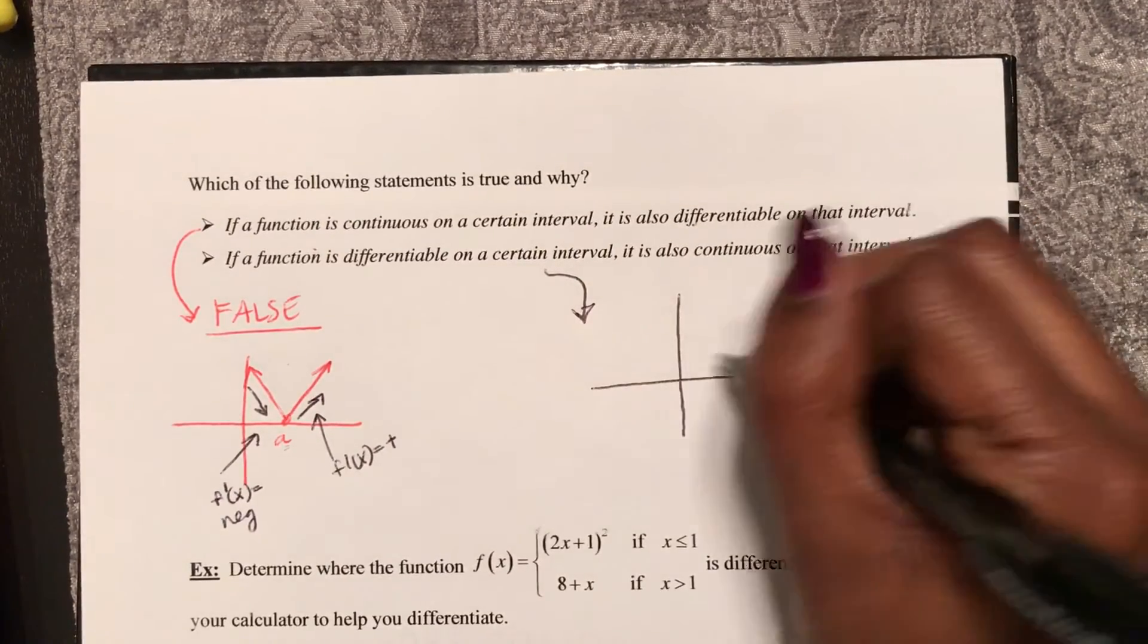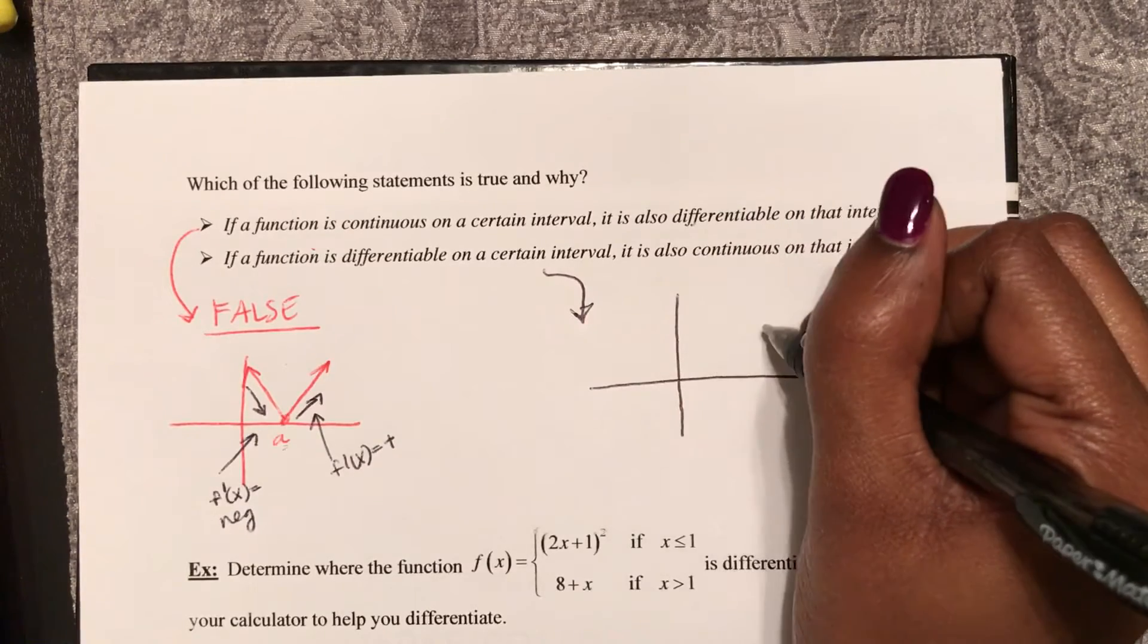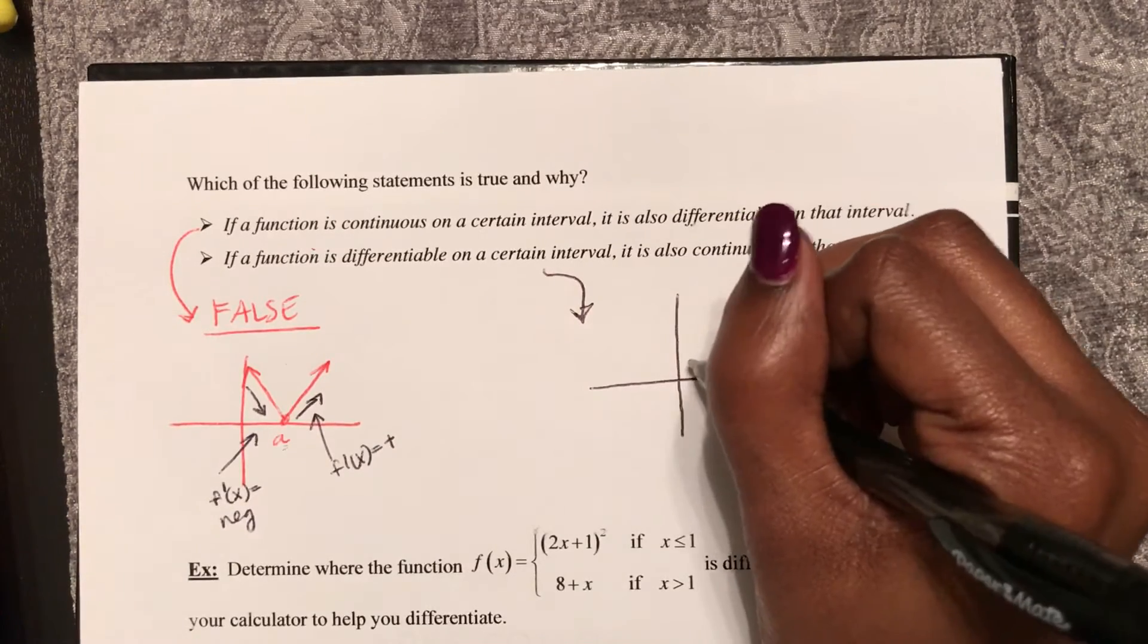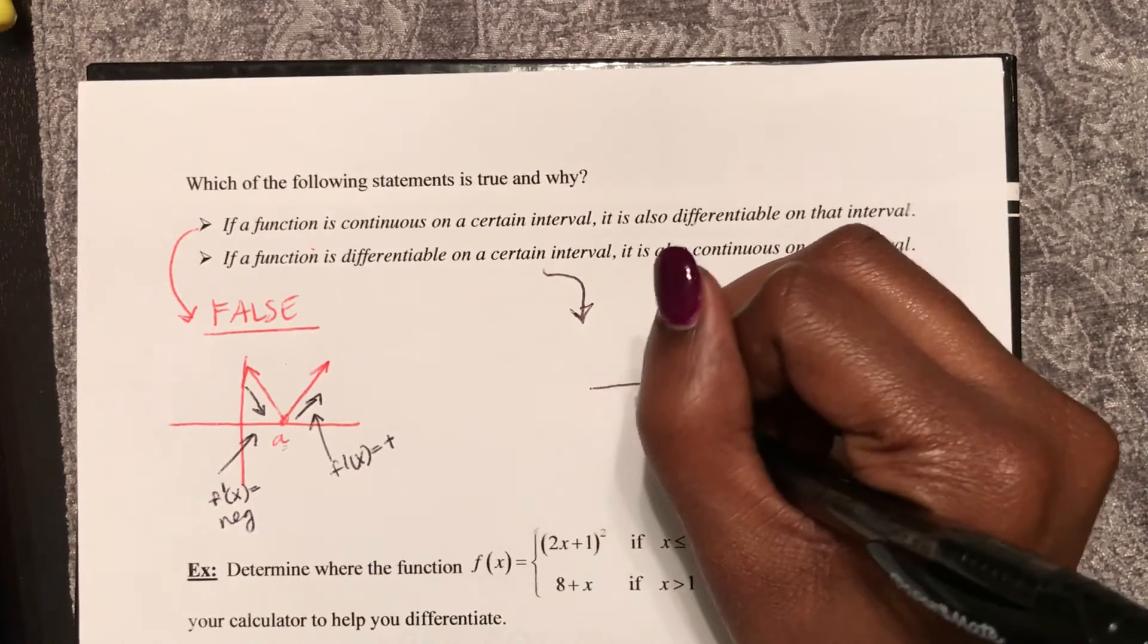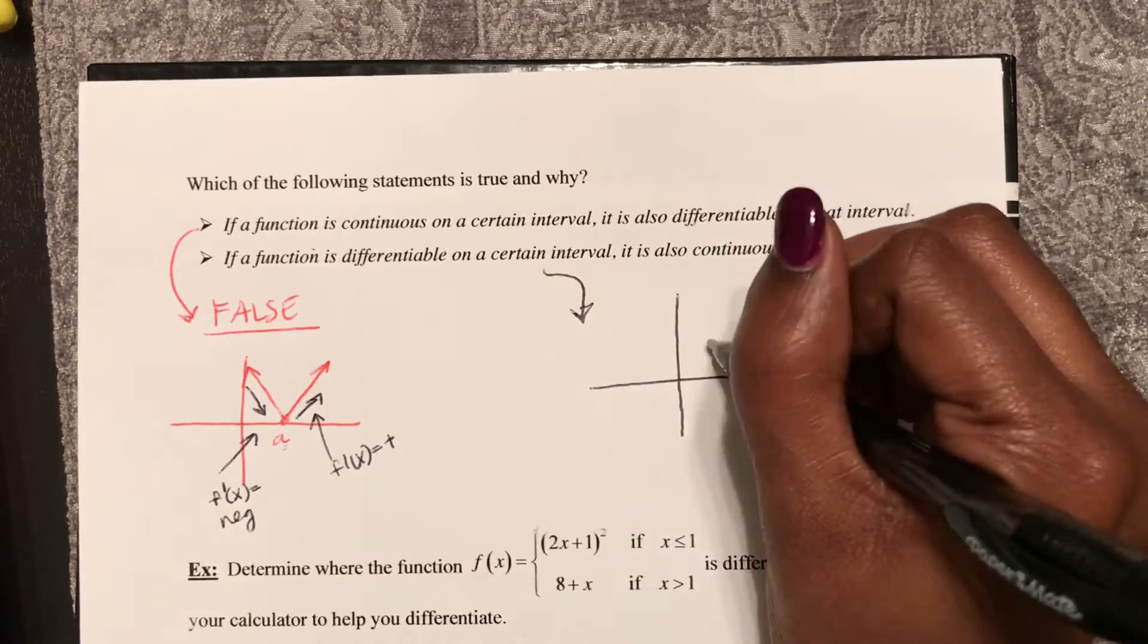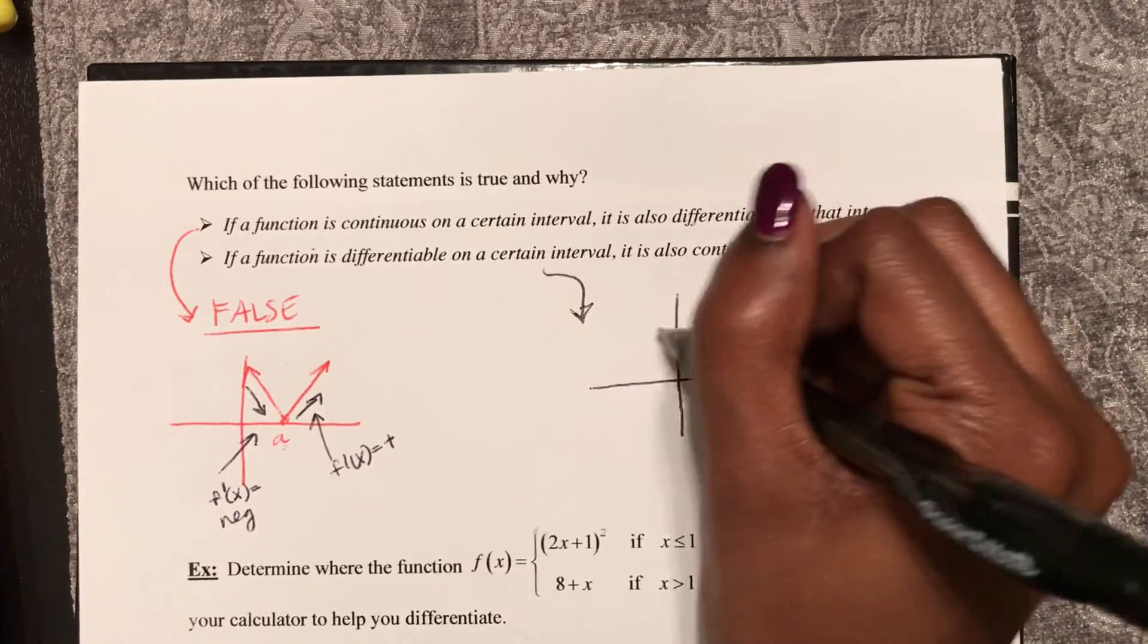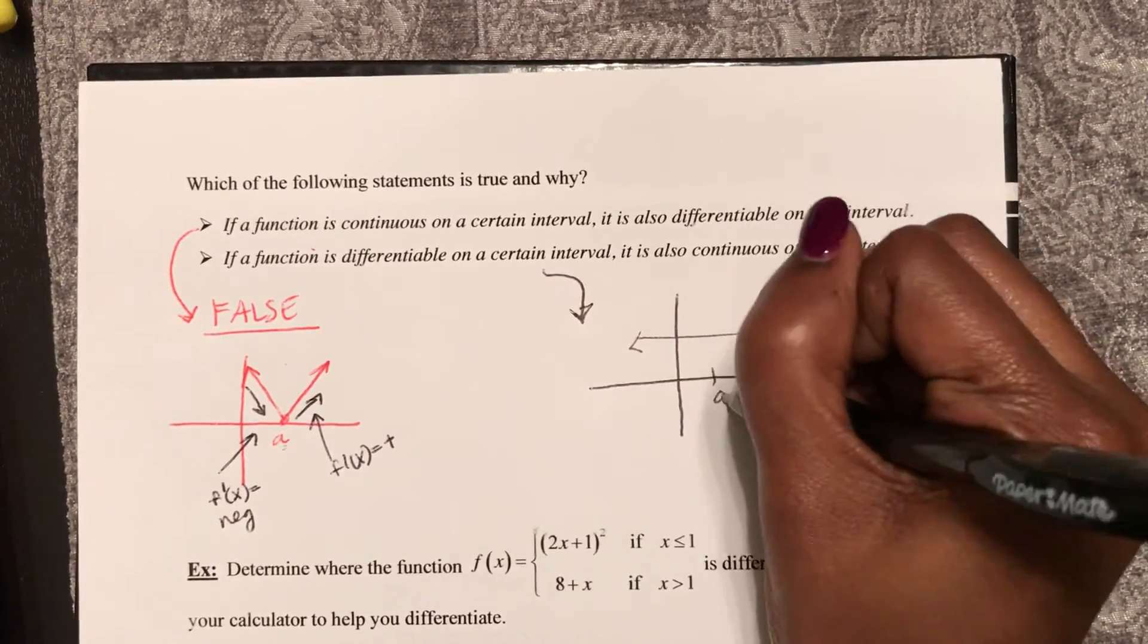That means that the slope as we approach a point from both sides are the same. So for instance, let me do a really basic one, the most common. A constant function at a.